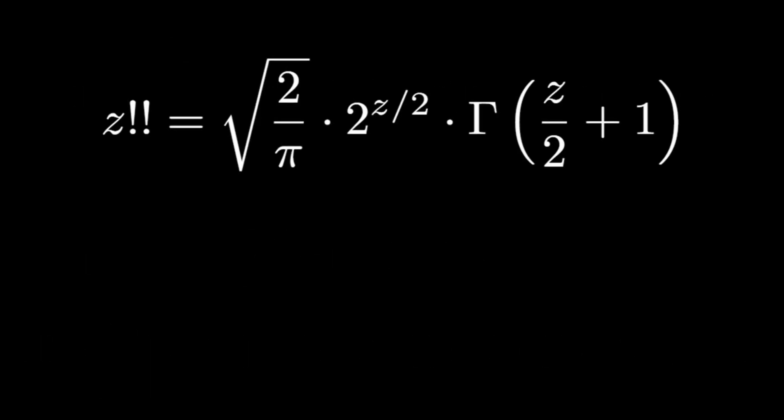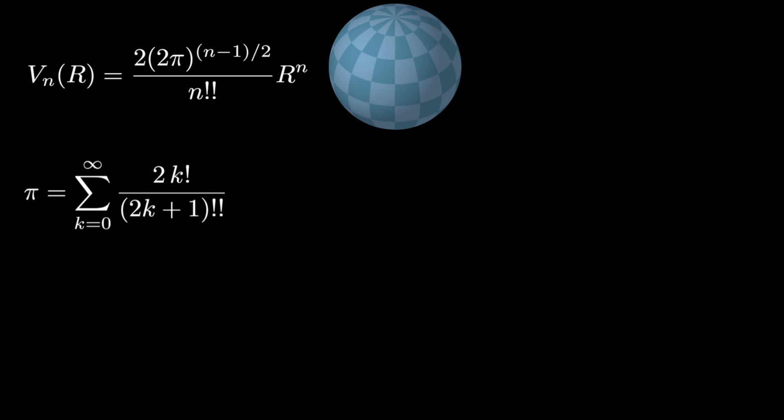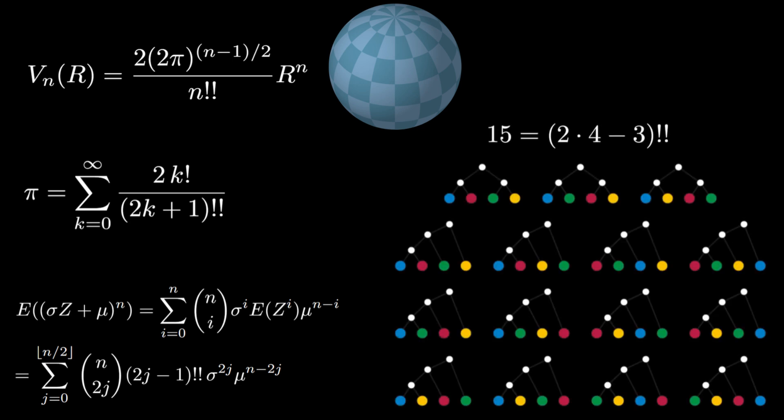The double factorial can be related to the gamma function where z is a complex value. If we plug in 0 for z, we get that the double factorial of 0 equals the square root of 2 over pi. Some applications of the double factorial include calculating the volume of an n-dimensional ball, evaluating series representations of pi, computing the even moments of a normally distributed random variable, and counting the number of rooted binary trees with labeled leaves.